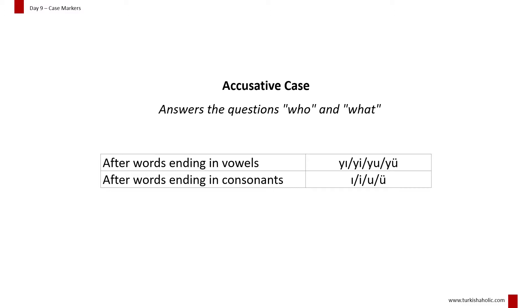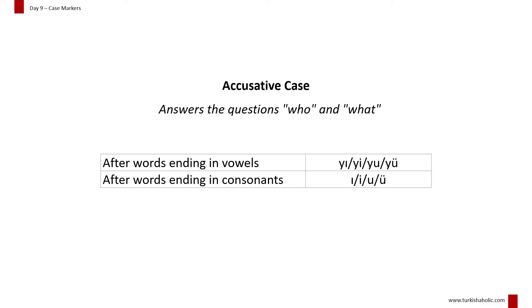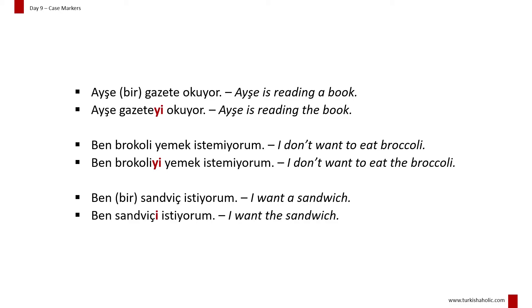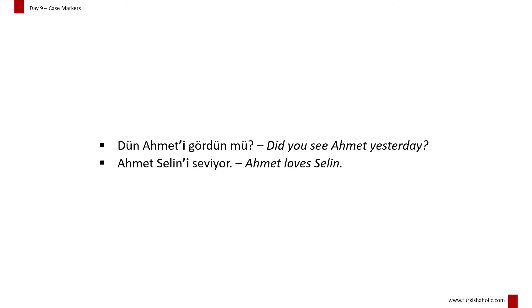Nouns that are affected by the action of a verb use the accusative case. The accusative case is used to show the definite object of a verb. It can be found by answering the questions 'kimi' meaning 'who' and 'neyi' meaning 'what'. Ayşe gazete okuyor / Ayşe gazeteyi okuyor. Ben brokoli yemek istemiyorum / Ben brokoliyi yemek istemiyorum. Ben sandviç istiyorum / Ben sandviçi istiyorum. Don't forget to use the apostrophe with proper nouns. Dün Ahmet'i gördün mü? Ahmet Selin'i seviyor.